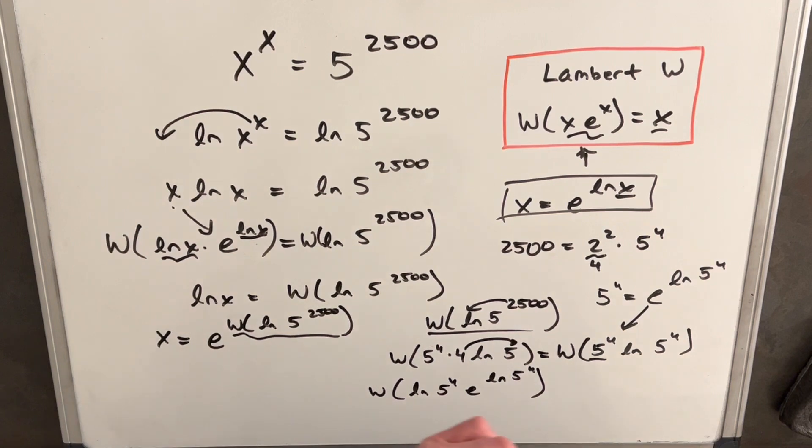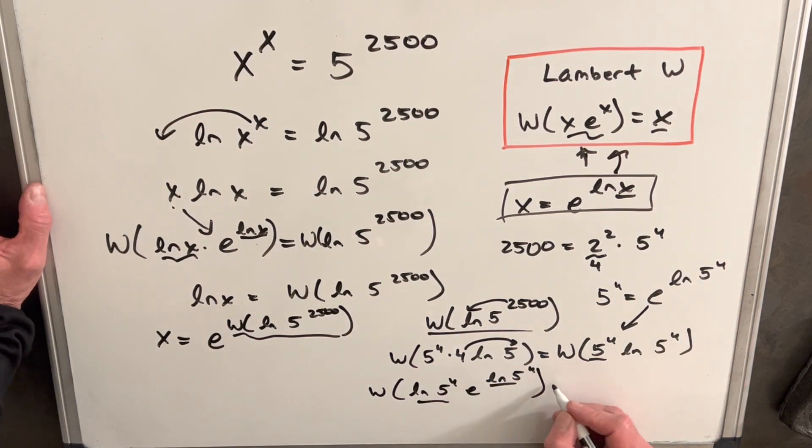And now we can use this formula again. We have the same input and exponent. So this is going to spit out just ln 5 to the 4th.